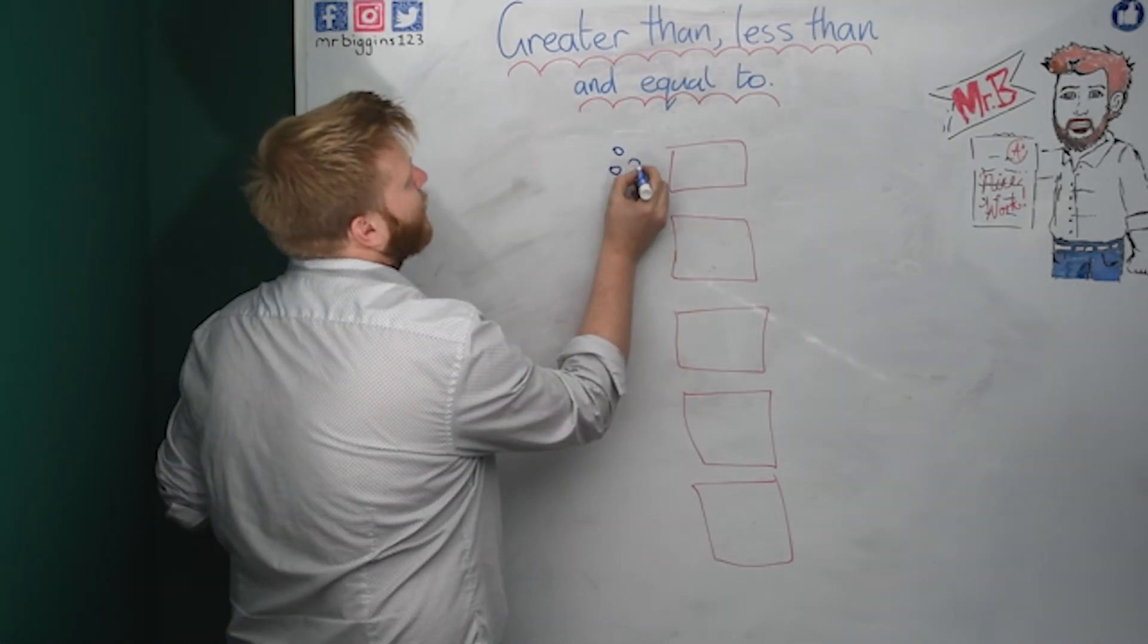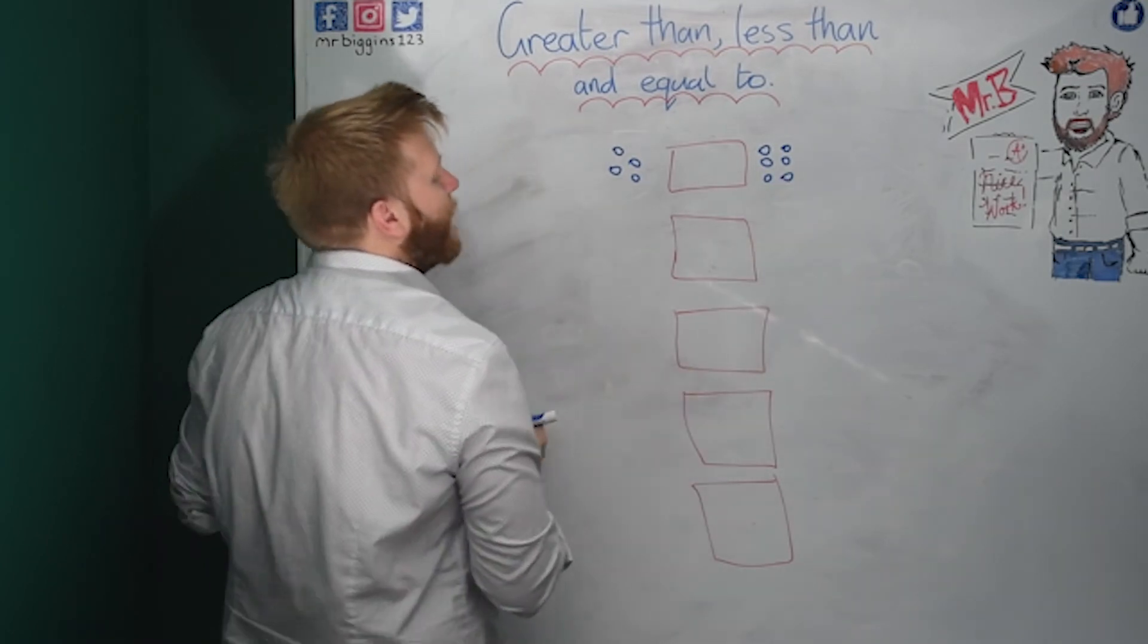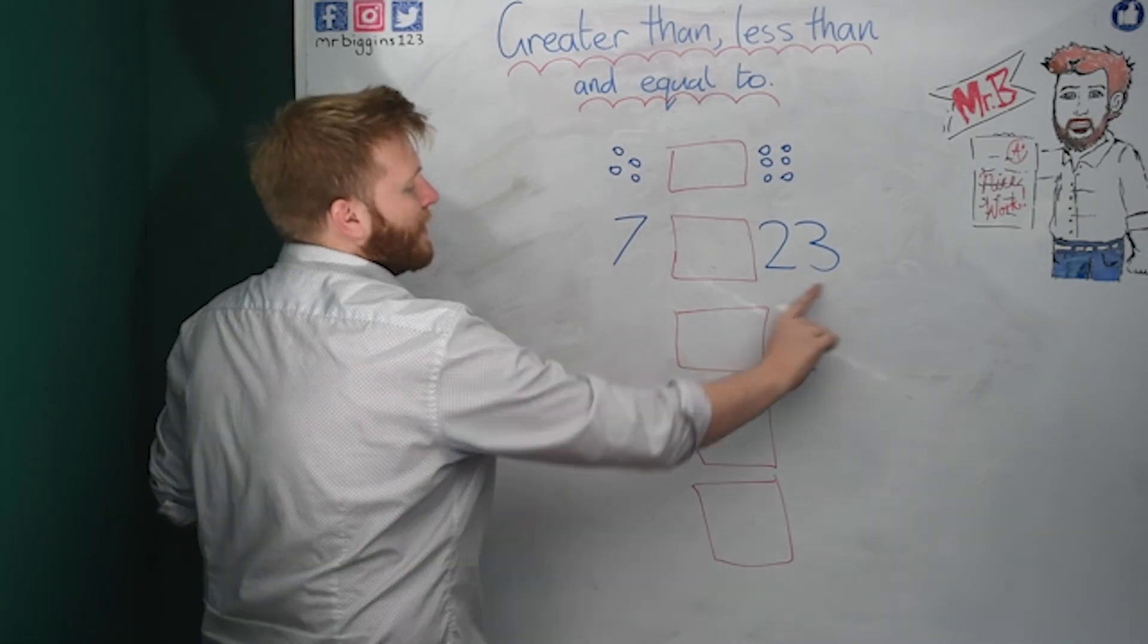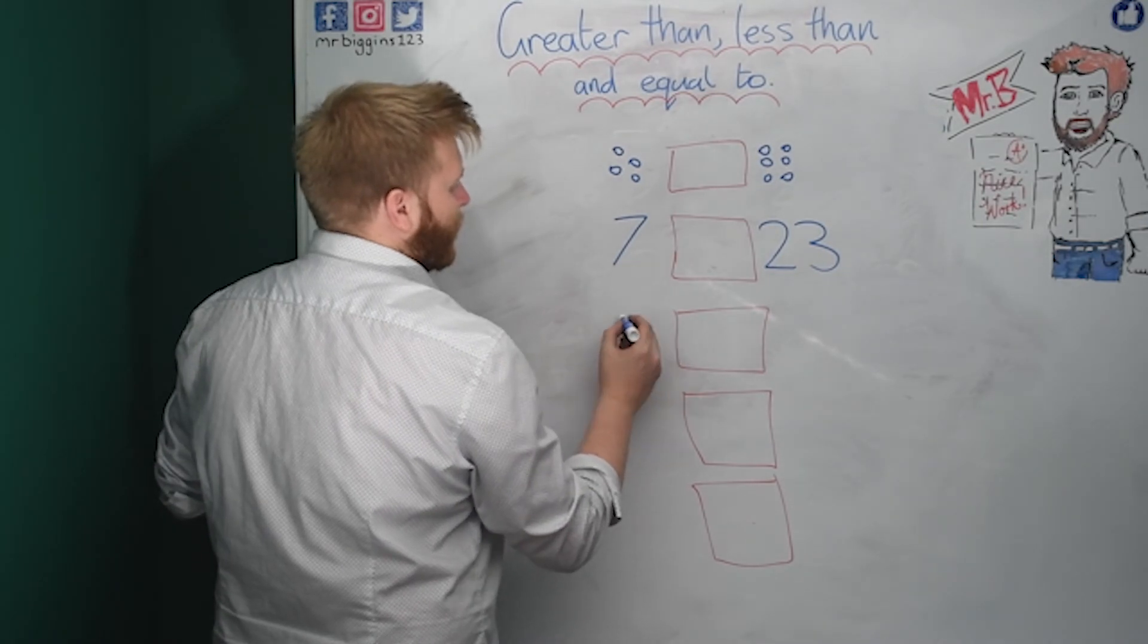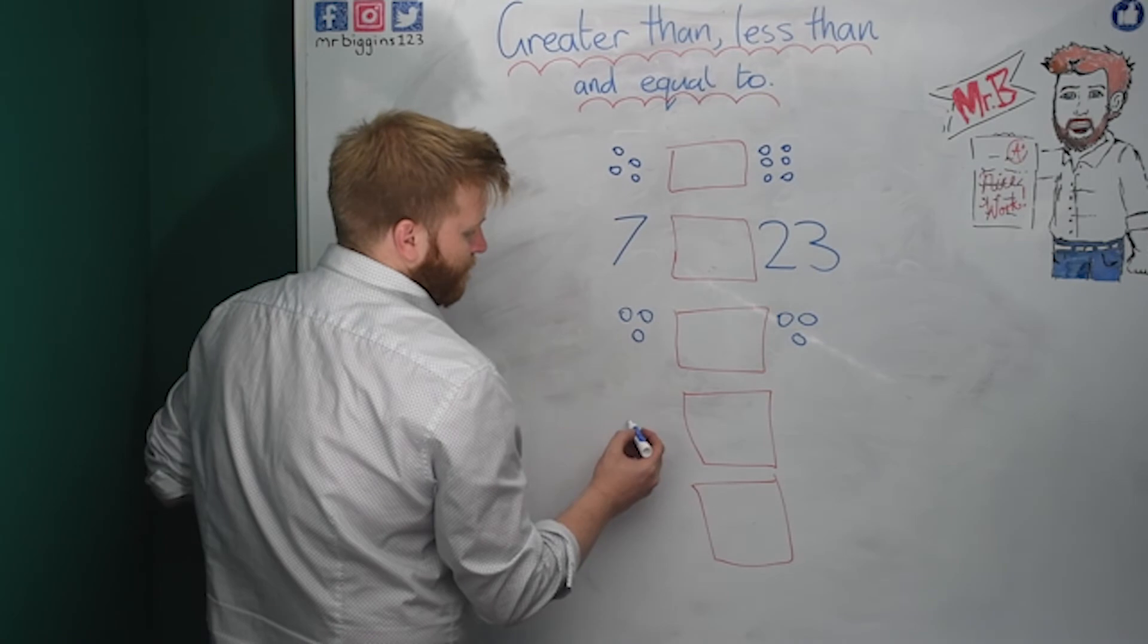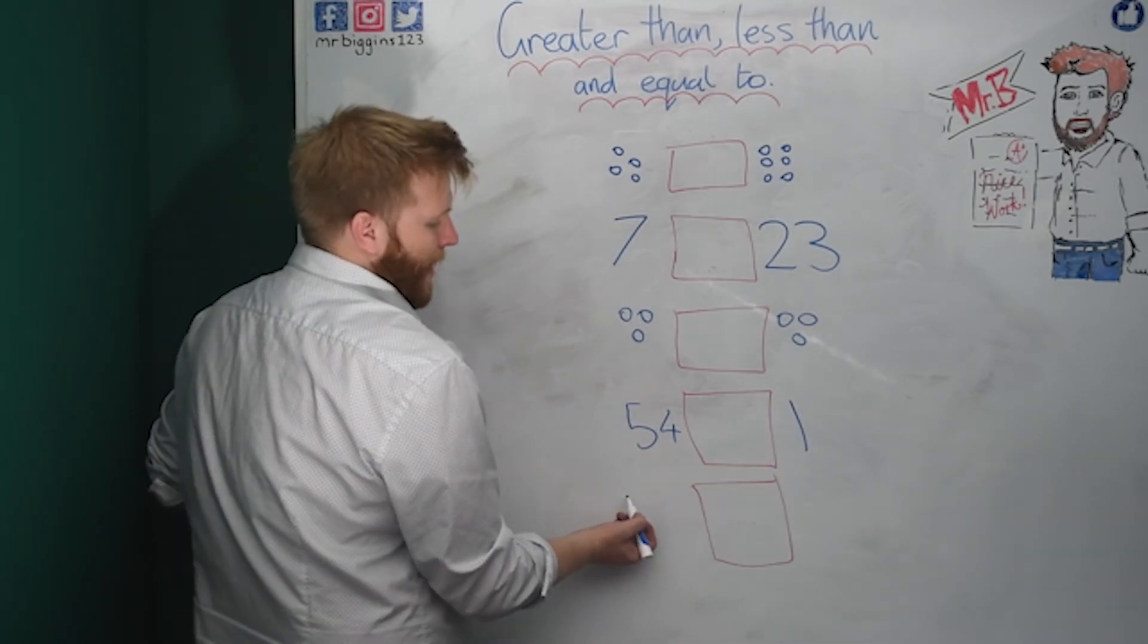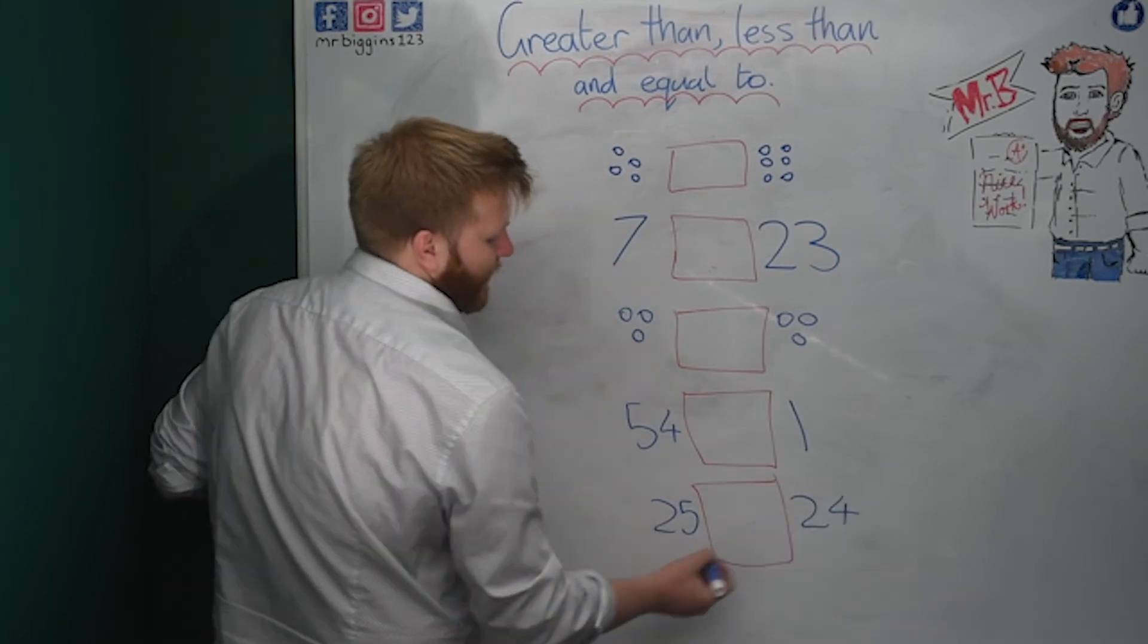So this one I'm going to draw some objects. This one, let's do some numbers on this one. Let's put seven and twenty-three. I think what we'll go in the middle there. Let's do some numbers again. Actually, let's do some objects again. Fifty-four and one with that one. And then lastly, let's go with twenty-five and twenty-four.